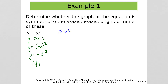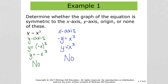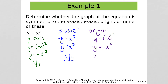Now we'll test the x-axis. We let y be negative. Solving for y brings the negative over, and we don't have an equivalent equation — y equals negative x³ is not the same as y equals x³. Then to test for symmetry with the origin, we let both y and x be negative. We get negative y equals negative x³. Dividing both sides by negative 1, we do get an equivalent equation to the original. So yes, this function is symmetric with respect to the origin.